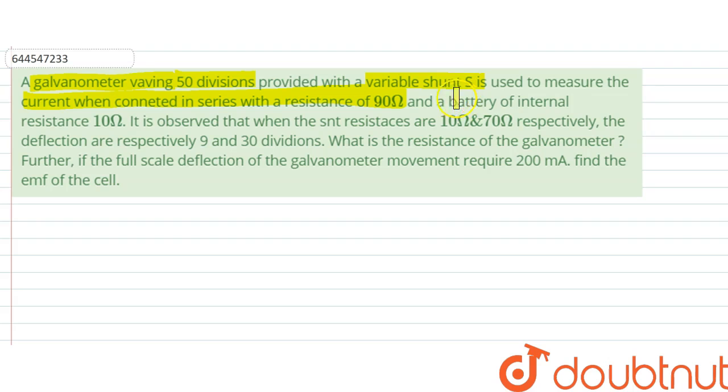And a battery of internal resistance 10 ohm. It is observed that when the shunt resistances are 10 ohm and 70 ohm respectively, the deflections are respectively 9 and 30 divisions.